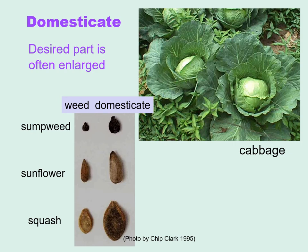In a domesticate, the desired part often becomes enlarged through time, whether that's something like a leaf, as you see in cabbage, or whether that's a seed like you see in sunflower seeds.